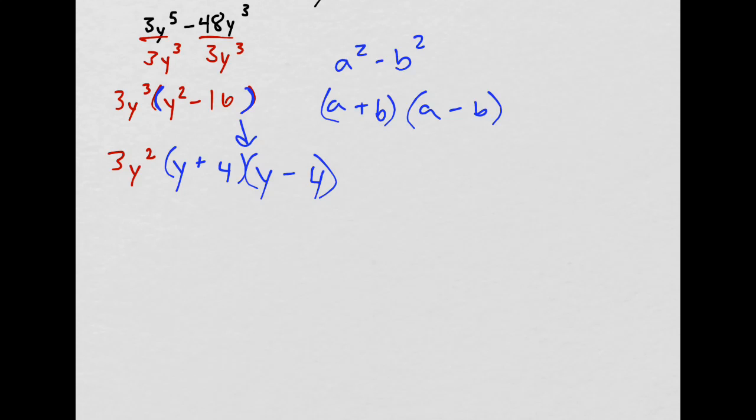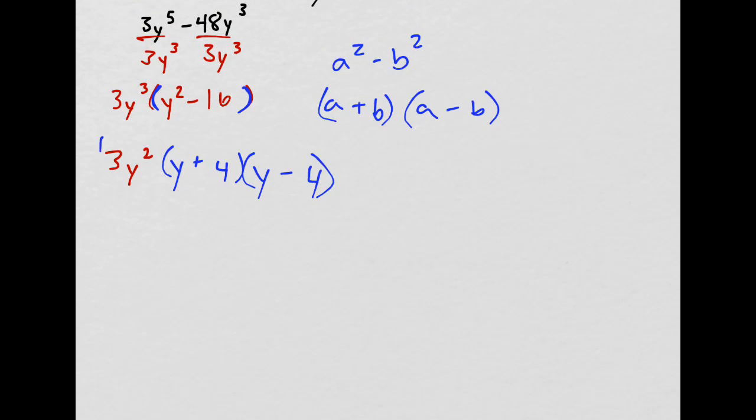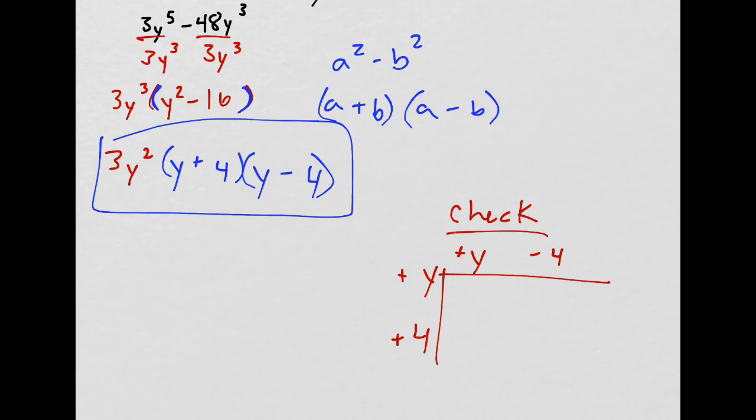This looks like magic to go from there to there, but this is the answer. But if I wanted to check, here's what I could do. I can multiply this out. So I would have y plus 4, and then y and then negative 4. And I'm going to make my box.